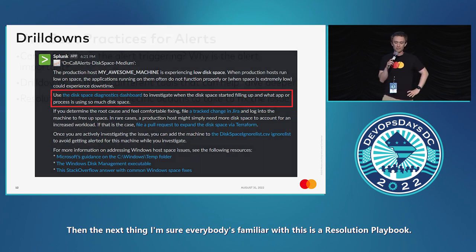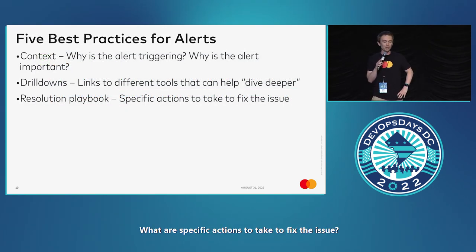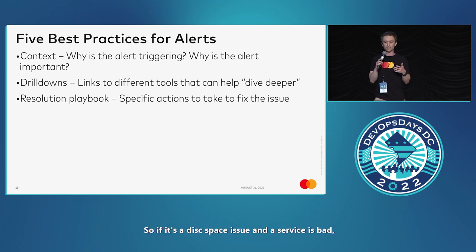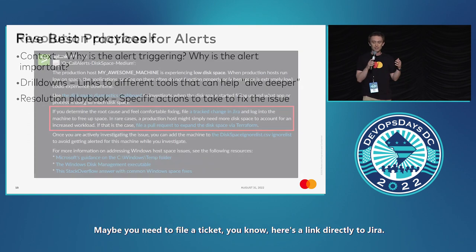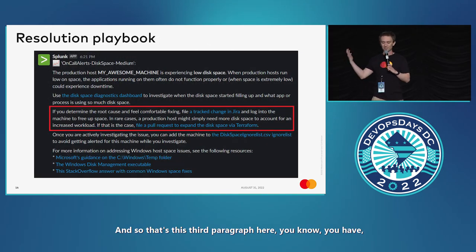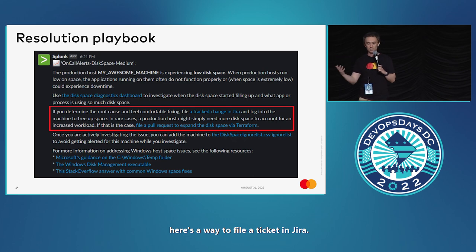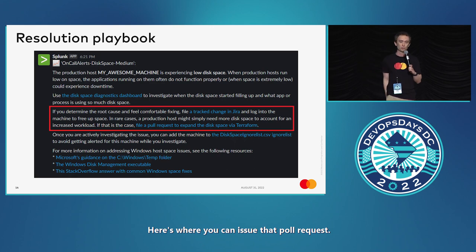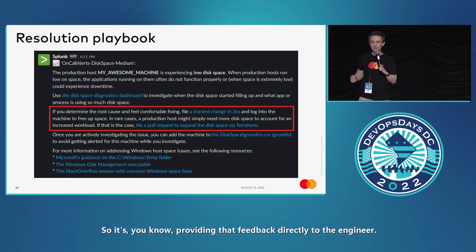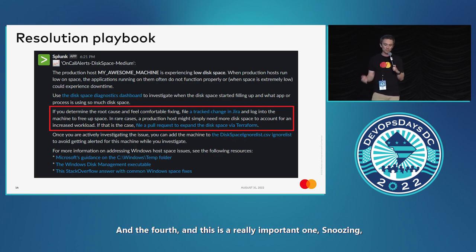The third best practice is a resolution playbook — specific actions to take to fix the issue. If it's a disk space issue and a service is bad, it tells you how to restart the service, or maybe you need to file a ticket — here's a direct link to Jira. We also use Terraform, so here's where you can issue that pull request to expand the disk. It provides that guidance directly to the engineer.